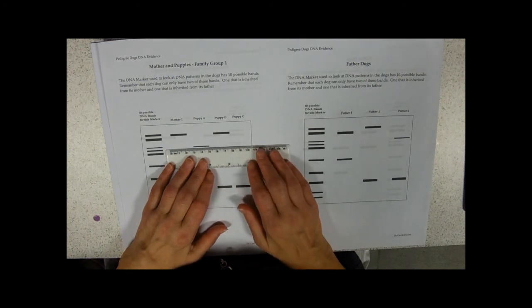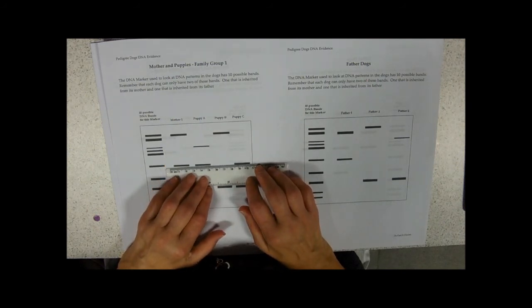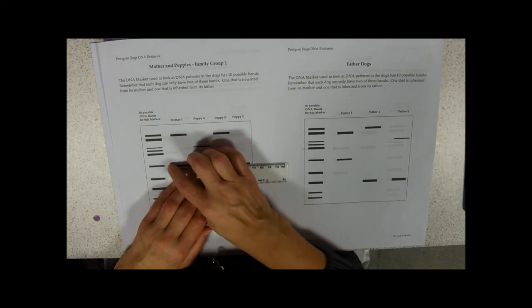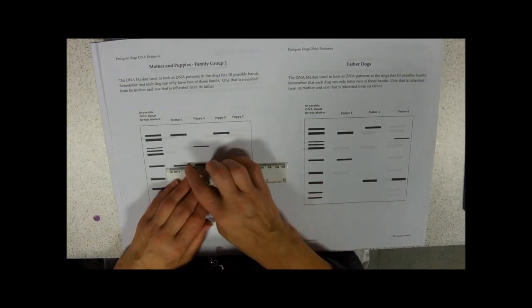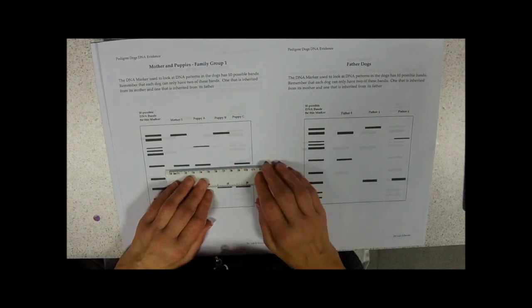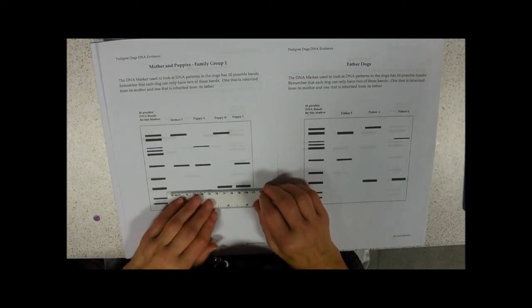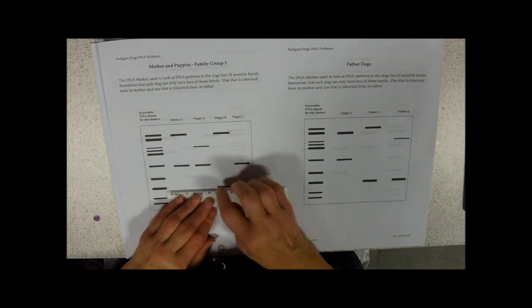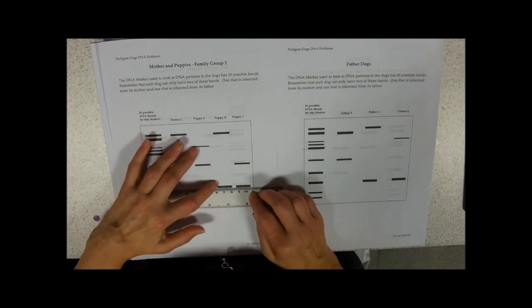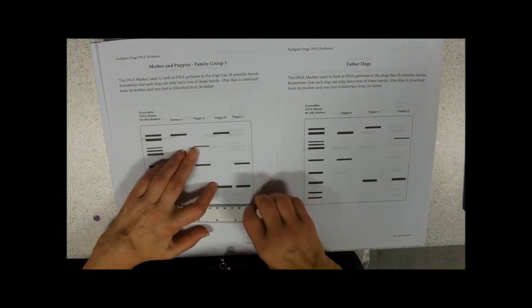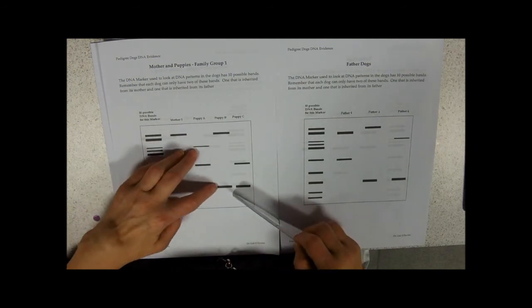Puppy A has inherited this but not from its mother. Its mother hasn't got it, so it must be from the father. Dog all three puppies have inherited that fragment from their mother. The mother's got it and puppy A and C have got it. And then this one not present in the mother, so this one must be from the father.